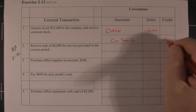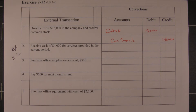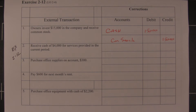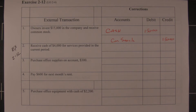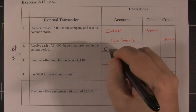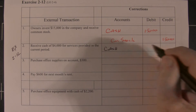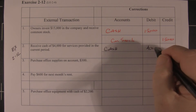So far this guy's not doing so well. On the next one, we received cash of $4,000 for services provided. He debited cash for $4,000 and credited service revenue — and that's correct. We'll leave that in black ink.